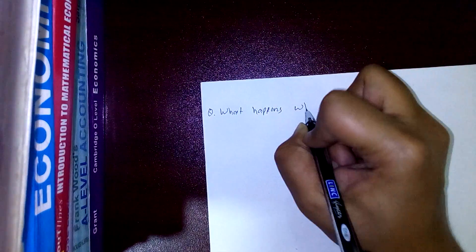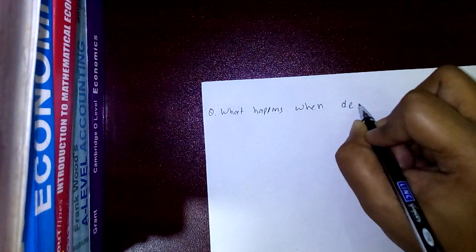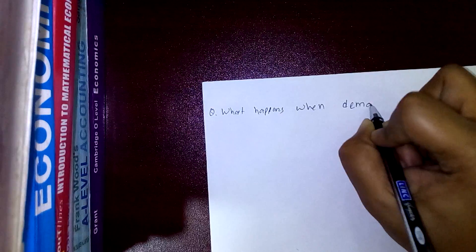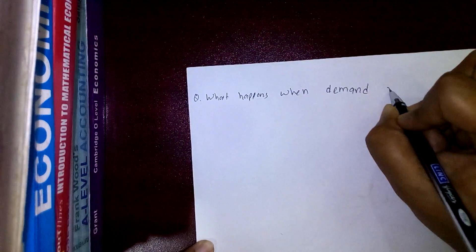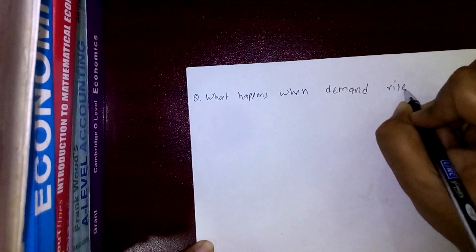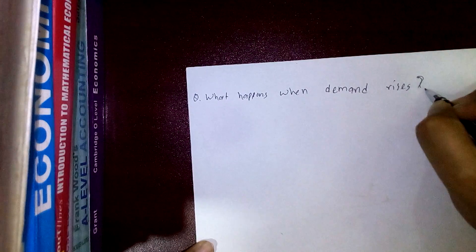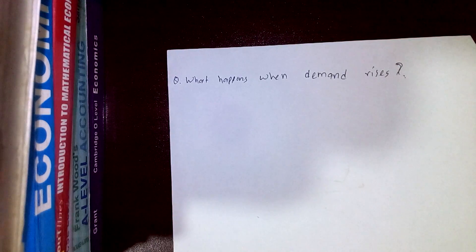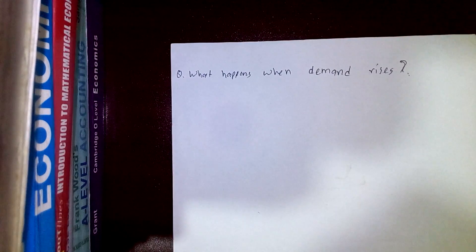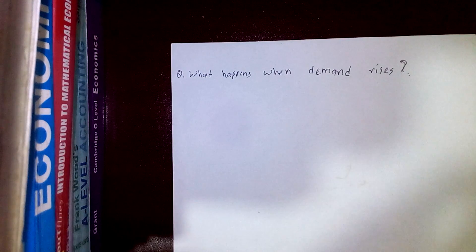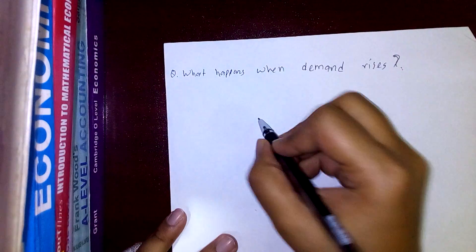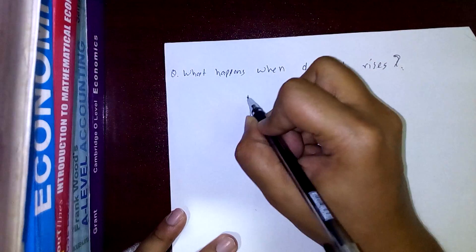Let me repeat: equilibrium is the point of intersection of the demand curve and the supply curve. It sets the market price and the quantity that will be traded — simple as that. Now I'm going to show you how equilibrium changes and what the effect of changing equilibrium is.